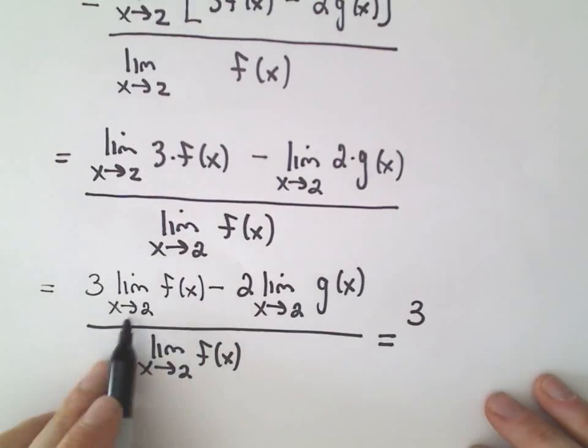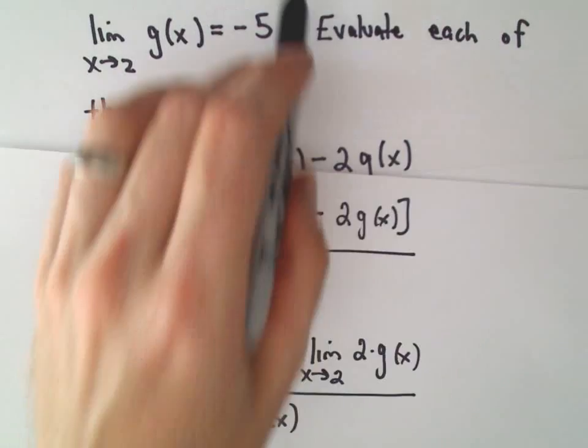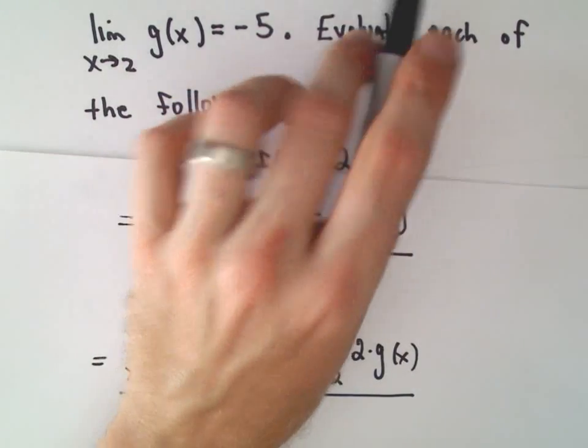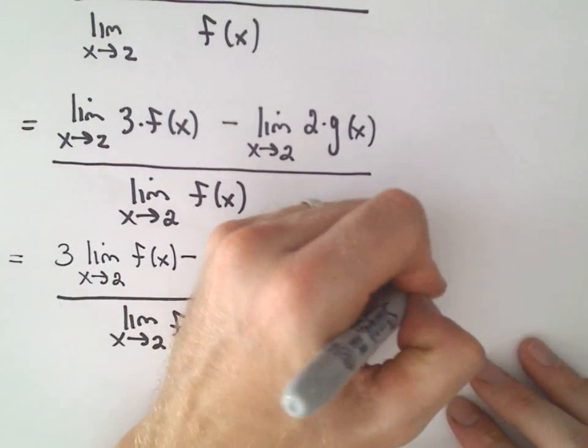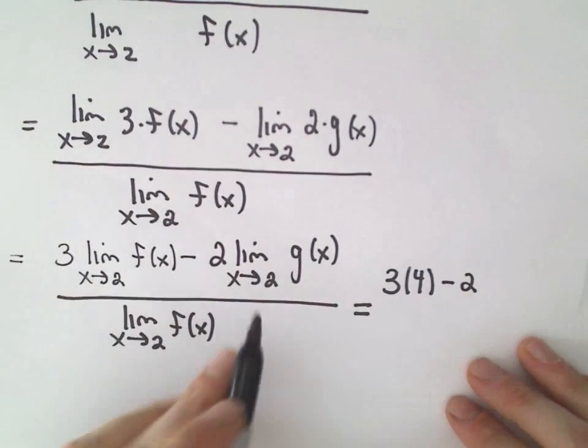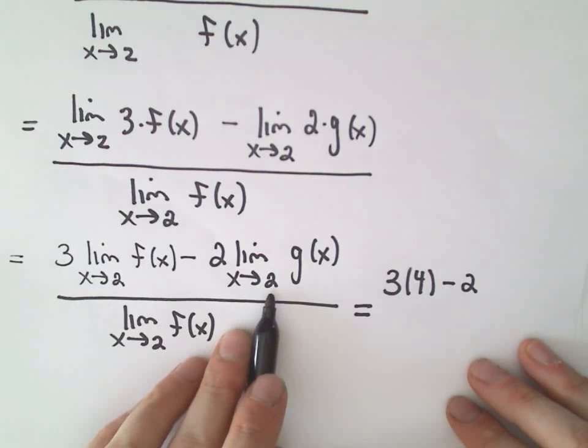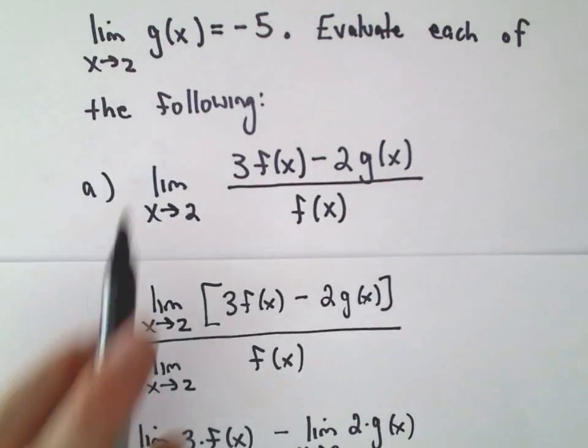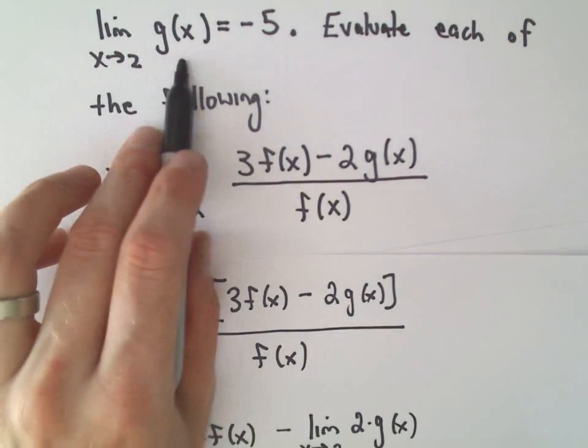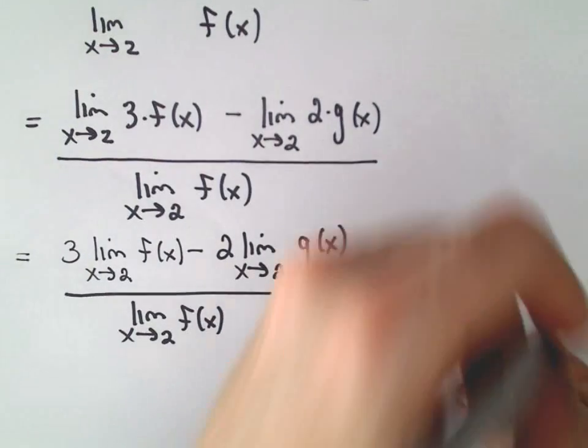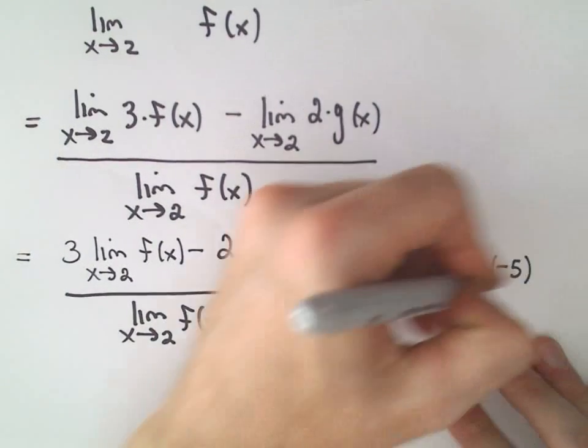We said the limit as x approaches 2 of f of x, that was given to us as 4, so I'm just going to plug that in. We'll have 3 times 4 minus 2 times, well, when we do the limit as x approaches 2 of g of x, we said that's just negative 5. So let me plug that in there as well.